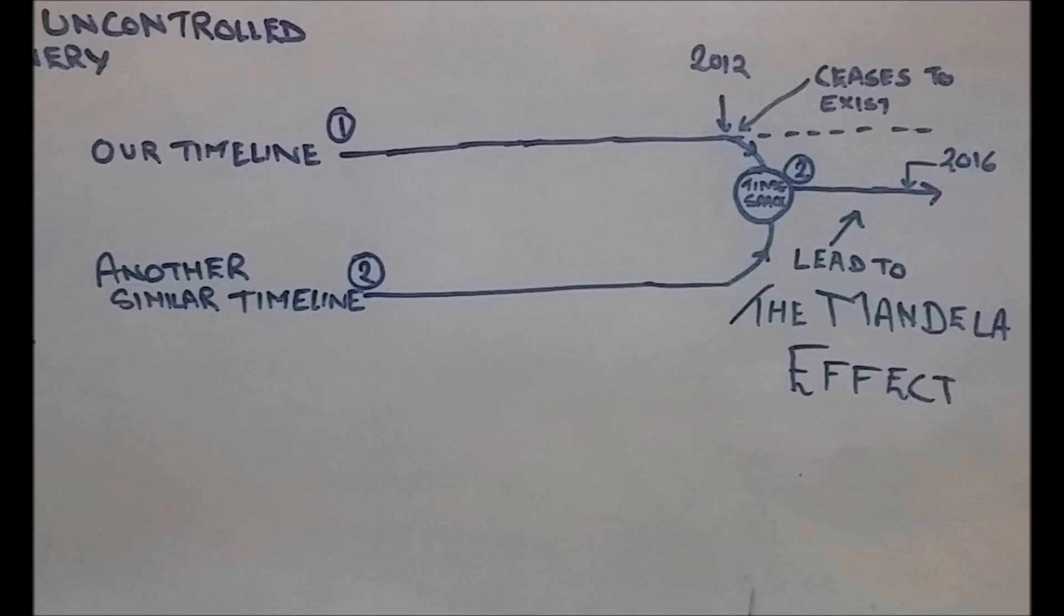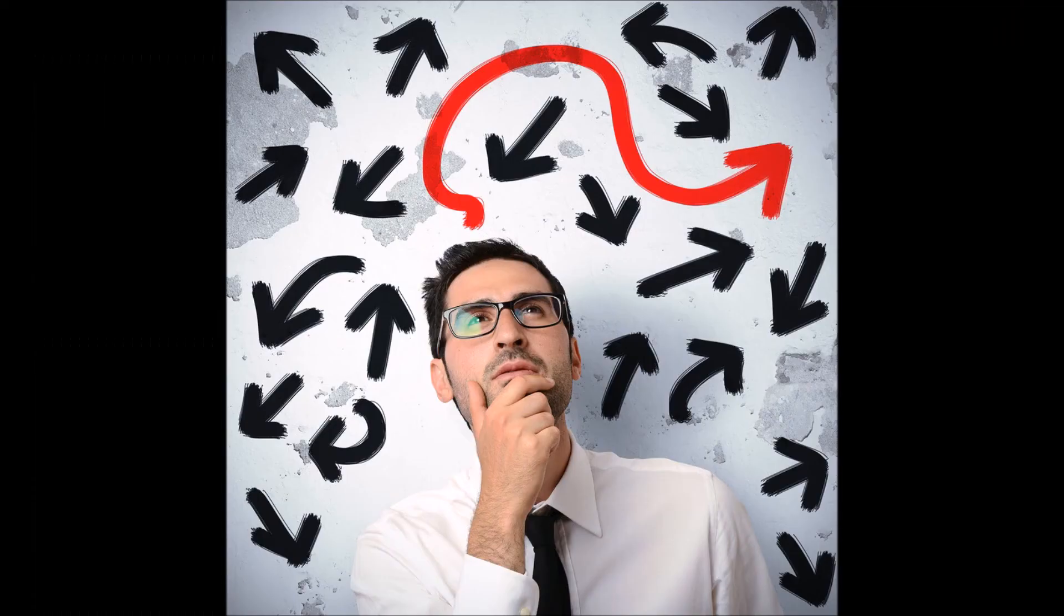That is the one that managed to survive. And our timeline, because of that hole in spacetime, our timeline was able to merge with that timeline. And the things that we remember from our timeline might have happened and we might be right about them, but the reason other people remember them differently is because they're from timeline two. And nobody really realized what happened until they started noticing all of this.